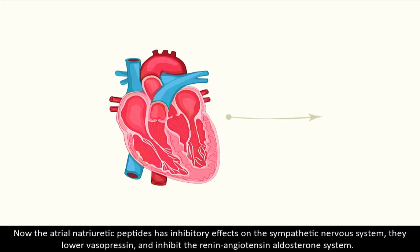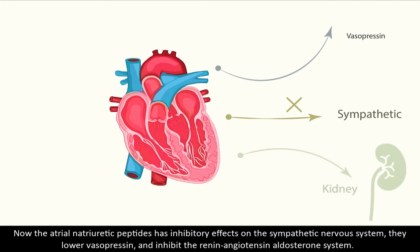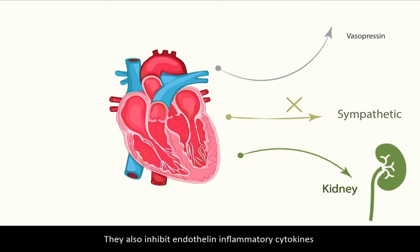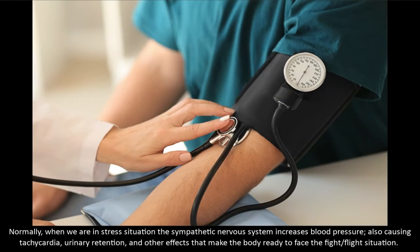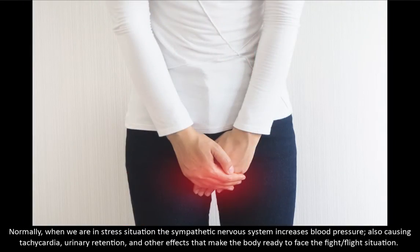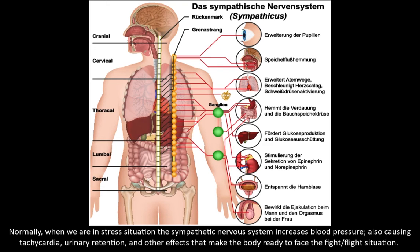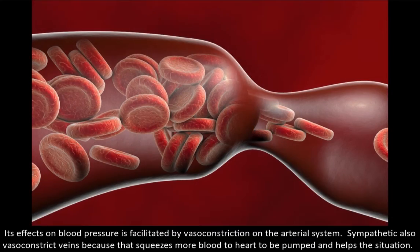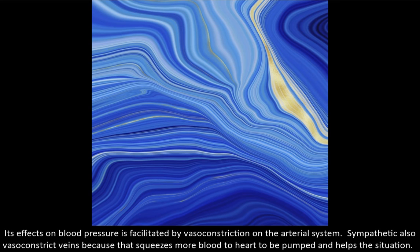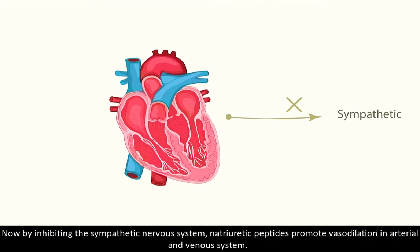Atrial natriuretic peptides have an inhibitory effect on the sympathetic nervous system — they lower vasopressin and inhibit the renin-angiotensin-aldosterone system. They also inhibit endothelin and inflammatory cytokines. Normally, in a stress situation, the sympathetic nervous system increases blood pressure, causes tachycardia, urinary retention, and other effects that prepare the body for fight-or-flight. Its effects on blood pressure are facilitated by vasoconstriction of the arterial system; the sympathetic also vasoconstricts veins, squeezing more blood to the heart.